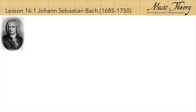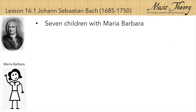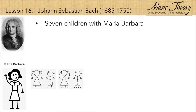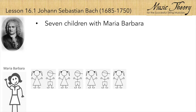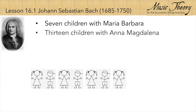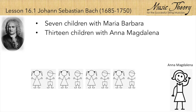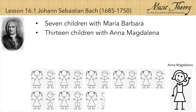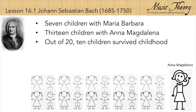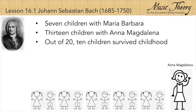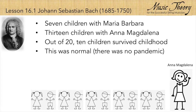Bach had seven children with his first wife, Maria Barbara, and 13 more with his second wife, Anna Magdalena. Half of his 20 children died before reaching adulthood. This was a normal but challenging part of life at that time.